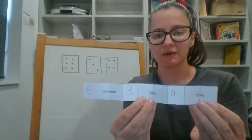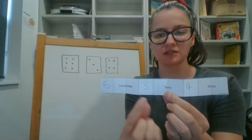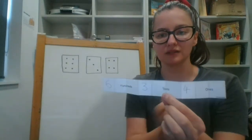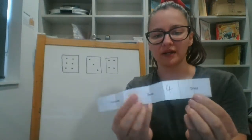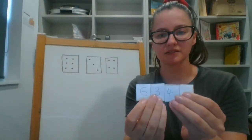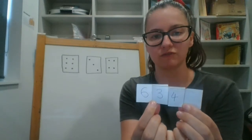So now I've got my numbers in my number expander. I can see that when my number is expanded I have got six hundreds, three tens and four ones. When I close my number expander up, I can see that my number is six hundred and thirty-four.